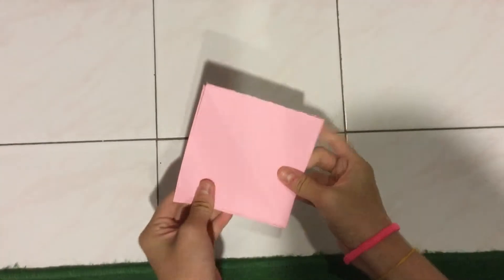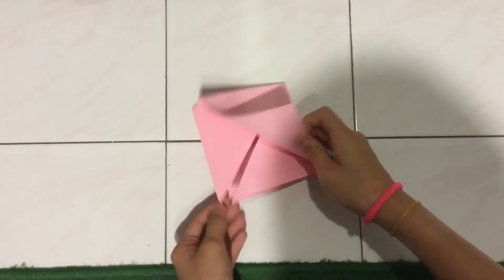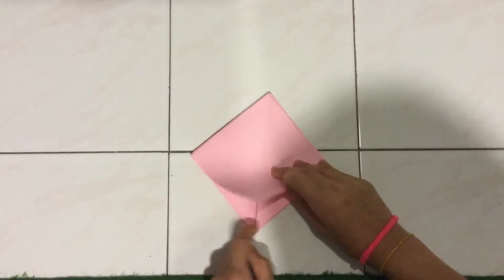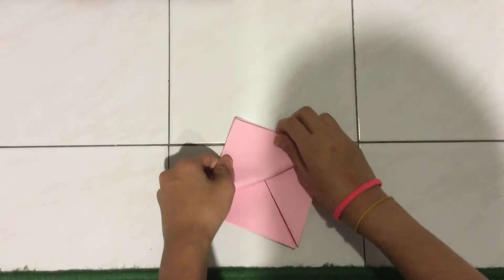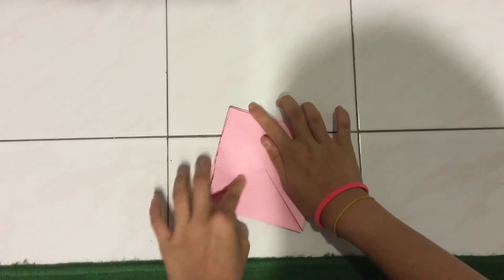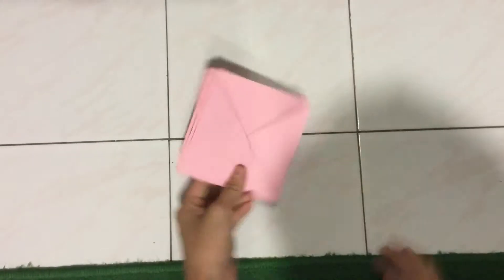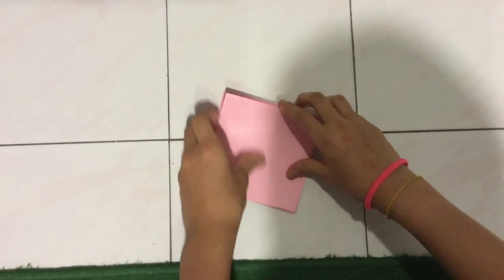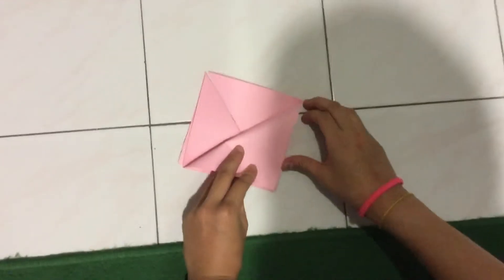So it looks like this. Then you want to take this part, so you want to take one of them and fold it downwards. So you want to create this shape, and then turn it around and do the same for the other side. So you fold it under.